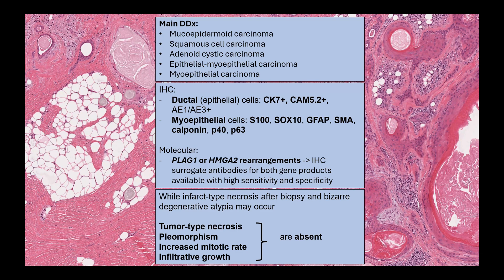Proving myoepithelial differentiation with immunostains — such as S100, SOX10, GFAP, SMA, Calponin, P40, and P63 — is also helpful in this differential diagnosis. Molecular analysis will show an absence of MAML2 rearrangements, which are highly specific for mucoepidermoid carcinoma. Pleomorphic adenomas harbor pathogenic translocations most frequently involving PLAG1 on chromosome 8q12, and a minority show HMGA2 rearrangements. Newly available surrogate antibodies for both gene products may support this diagnosis in selected cases.